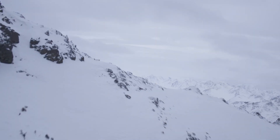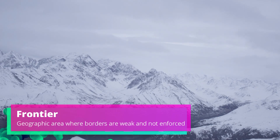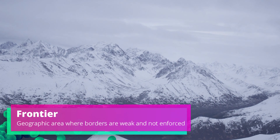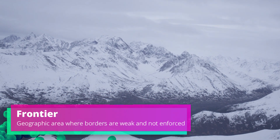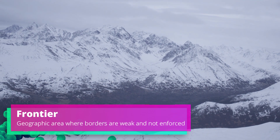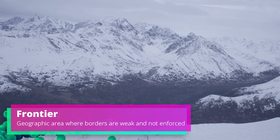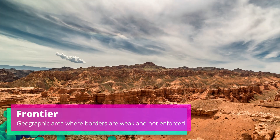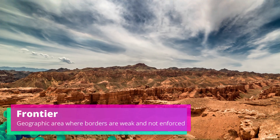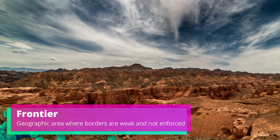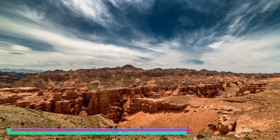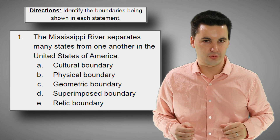Our last type of boundary — which, to be honest, is more of a concept and less of a boundary — is known as a frontier. Frontiers are areas where boundaries are poorly enforced; they're weak, and no state has direct control over the area. An example of a frontier would be Antarctica. Or if we go back in time, we could look at the United States and the Wild West as a great example of a frontier up until around 1912.